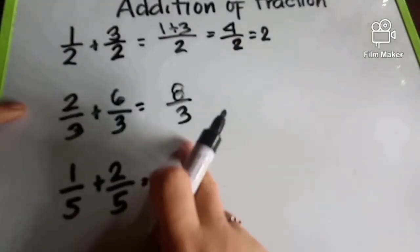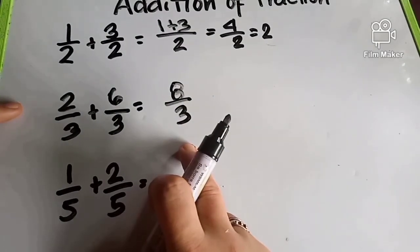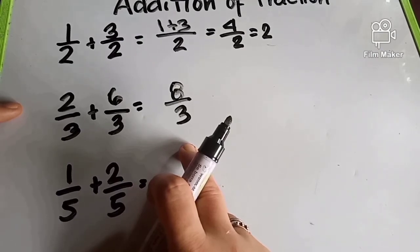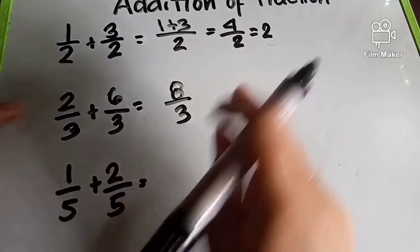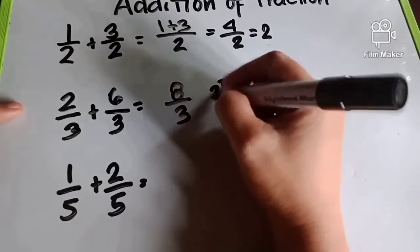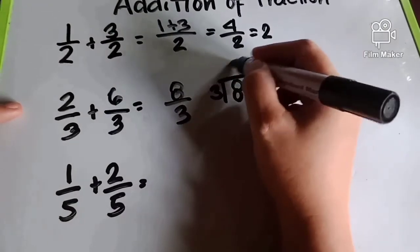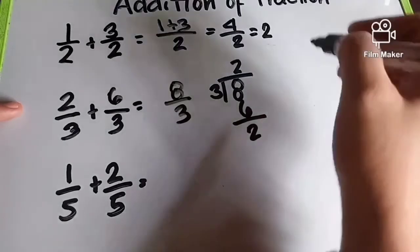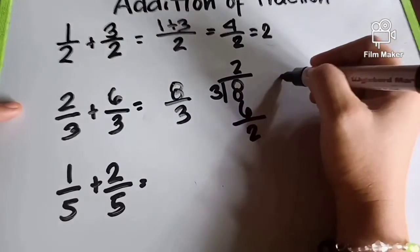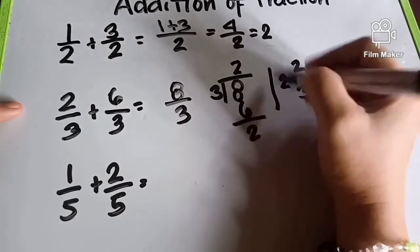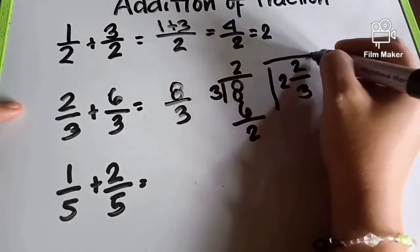Ito ba ay tamang sagot? Hindi pa. Kasi yun ang tinatawag na improper fraction. So paano mo makukuha yung pinakatamang sagot? 3 divided by 2, divided by 3. So the answer is 2 and 3 over 2, which would be the final answer.